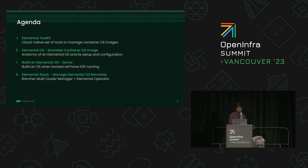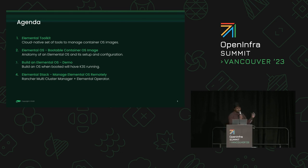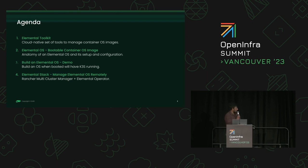Today I'm going to walk through what Elemental Toolkit is — a set of tools to manage operating system images like booting or upgrading an OS. I'll explain how to build an Elemental operating system using the toolkit, show a demo of booting a virtual machine, and give a brief overview of how to manage this Elemental OS at edge locations through Rancher Manager.